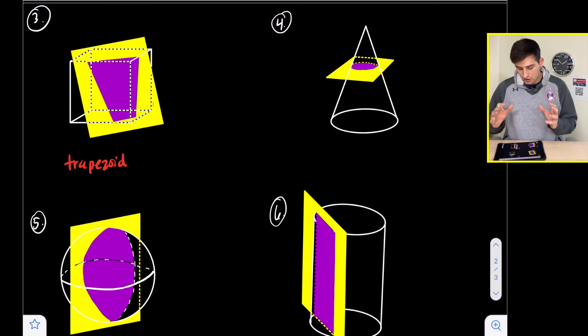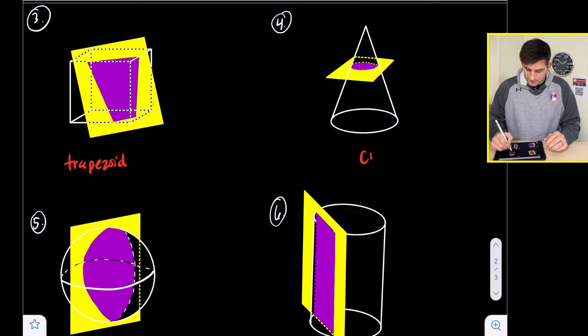For number four, we have a cone, and we are slicing the top off of it. That purple area creates a circular cross section.